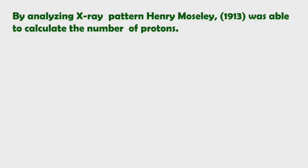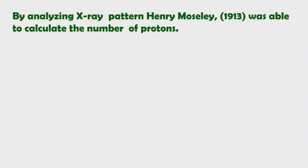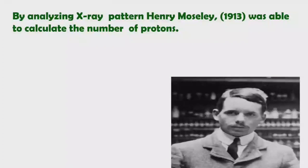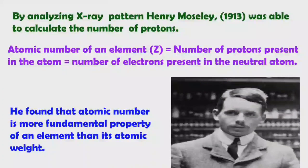Dobereiner's law of triads, Newlands' concept of octaves, and Mendeleev's periodic table were all based on atomic weight. In 1913, Henry Moseley, by analyzing X-ray patterns, was able to calculate the number of protons — that is, the atomic number. He found that atomic number is a more fundamental property of an element than its atomic weight. Based on Moseley's work, the modern periodic table was based on atomic number rather than atomic weight. In the next class we will discuss the modern periodic table.